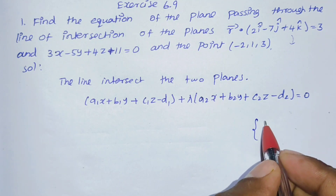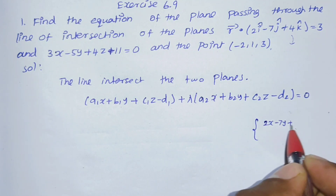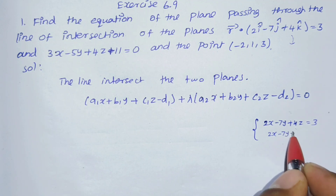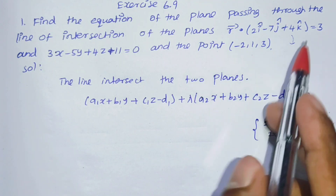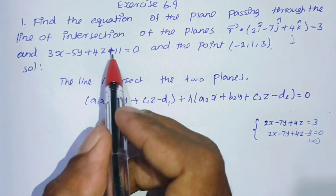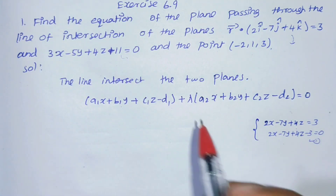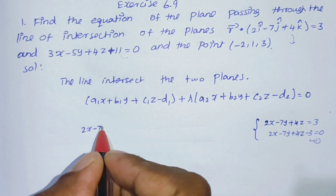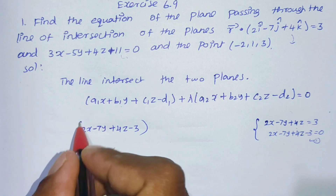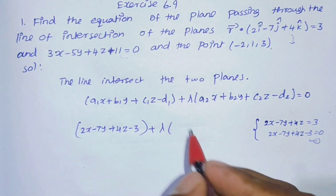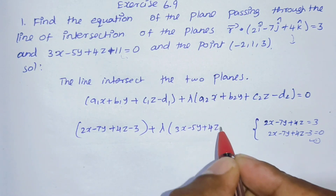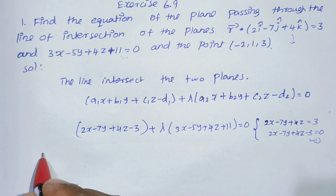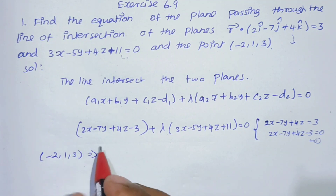After conversion, the first plane becomes 2x minus 7y plus 4z equals 0. Substituting into the condition theorem: 2x minus 7y plus 4z minus 3 plus lambda of 3x minus 5y plus 4z plus 11 equals 0. This is the combined equation passing through the point (-2, 1, 3).